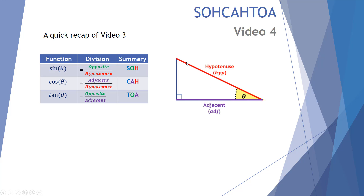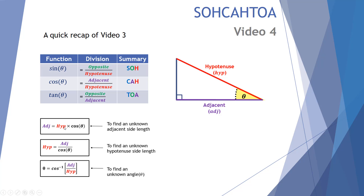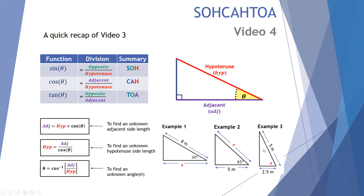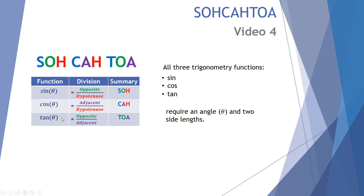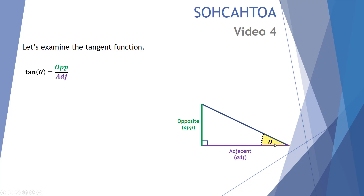Here's the right angle triangle we're looking at, whereby we have the hypotenuse — the large diagonal length — the adjacent, which is next to the angle, and of course theta, the angle. Today we're moving on to our third and final trig rule: the tangent function. Tangent of the angle is equal to the opposite length divided by the adjacent length. This requires an angle and two side lengths. We're interested in the opposite side length and the adjacent side length, shown here in green and purple.